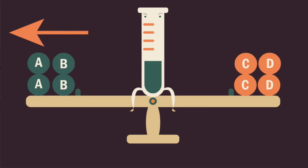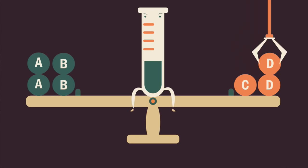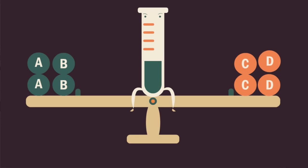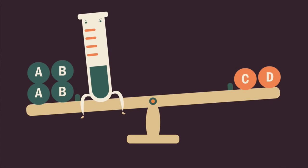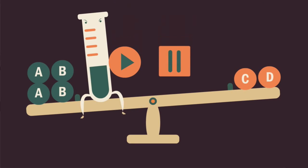What happens if we remove C and D as they are being produced, or if the concentration of C and D is decreased? Please pause the lesson to think about this and resume when you are done.